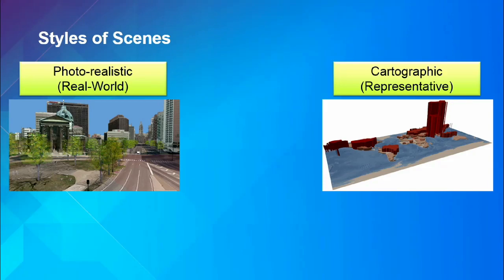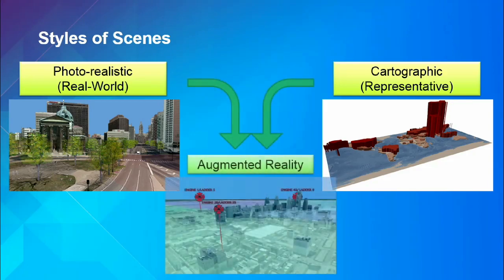On the right we have a cartographic scene — there's nothing real about it. It's a flat world with extruded heights for polygons showing relative populations of different places around the world. We're getting more information out of it. But the sweet spot is actually in the middle: augmented reality, a mixture of the two. There we've got realistic buildings and aerial photography, but also extruded semi-transparent polygons showing police districts and fire station symbols on sticks — real world so people feel familiar, plus cartographic representation so you can actually get knowledge out of it.